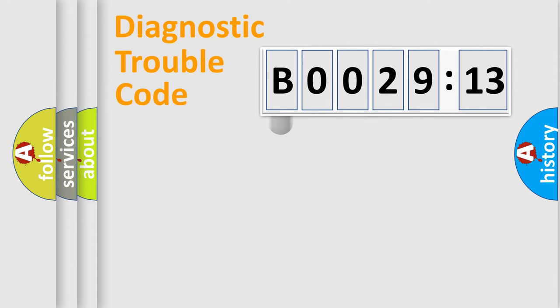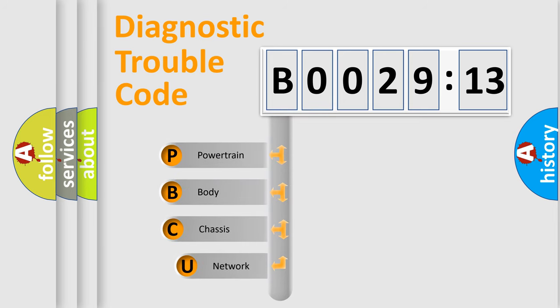First, let's look at the history of diagnostic fault code composition according to the OBD2 protocol, which is unified for all automakers since 2000. We divide the electric system of automobile into four basic units.